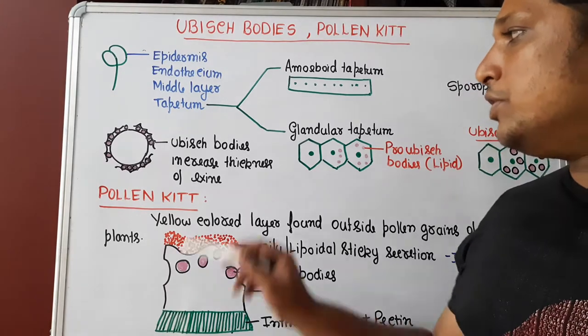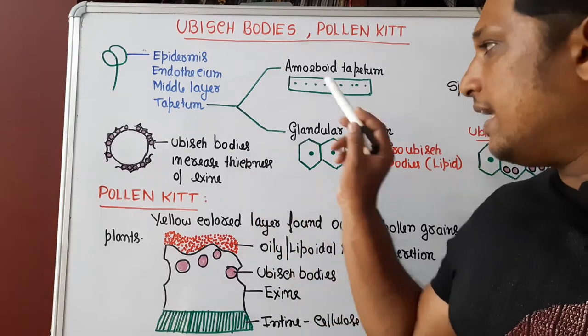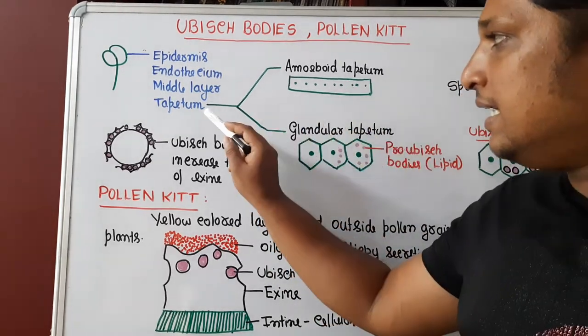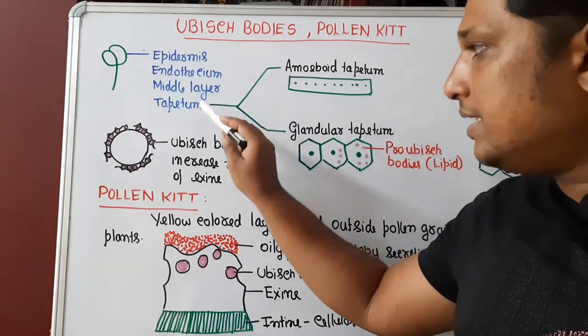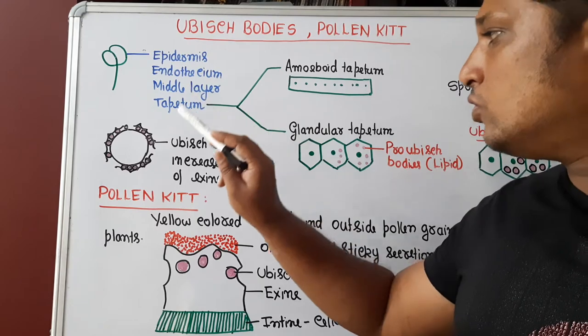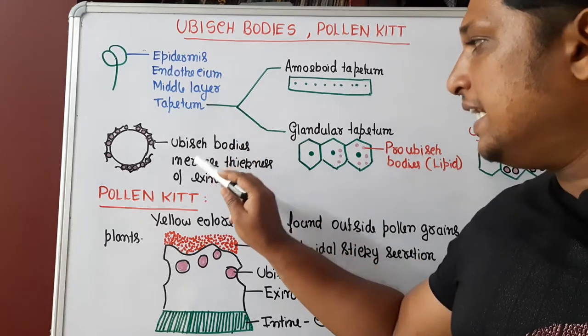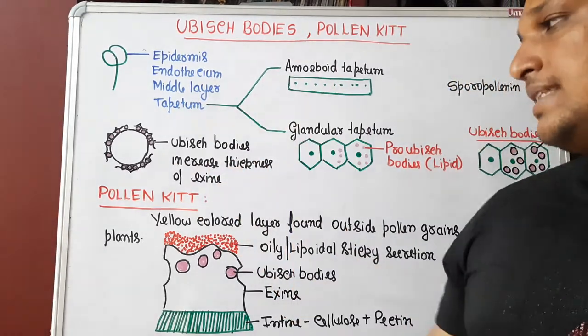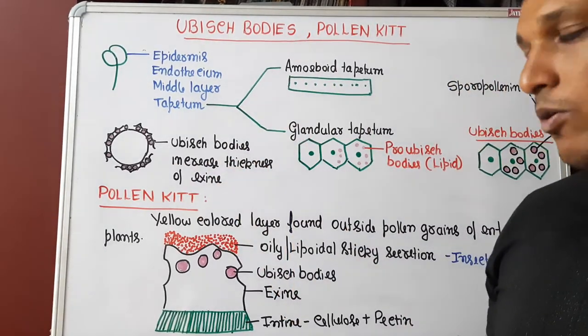So, what is the role of Ubisch bodies? They are the lipid bodies secreted by tapetum whose role is to increase the thickness of the exine layer of the pollen grain.